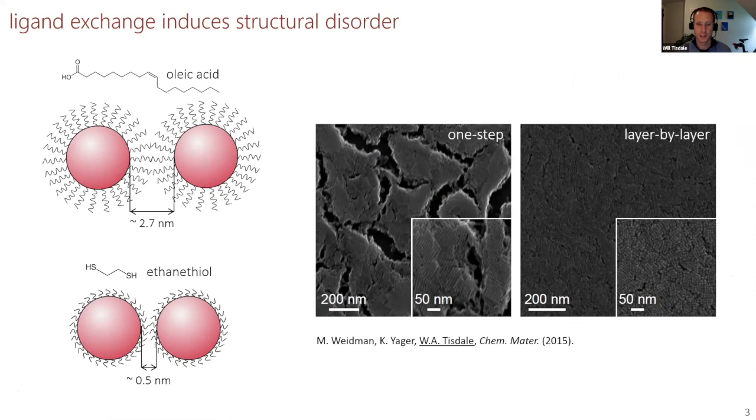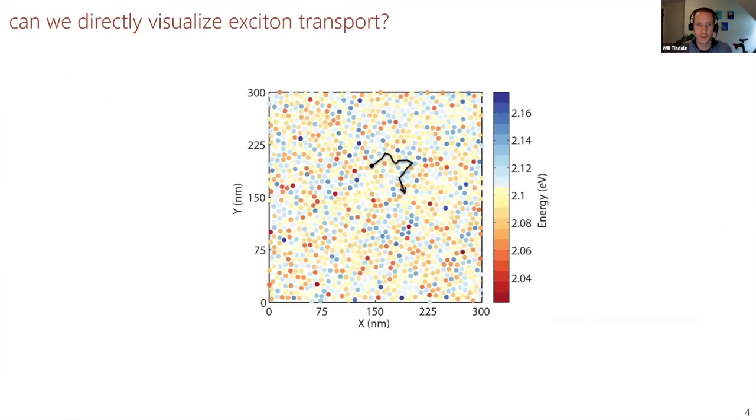As a result of that ligand exchange process, varying degrees of spatial and energetic disorder are introduced into the films depending on how you do the ligand exchange. You can maintain short range order but disrupt long range order or have a more continuous film but with a lot more local disorder. Very early on in my research career, I became really interested in the effect of disorder on transport and trying to nail down the microscopic dynamics of charges and excitons in these disordered arrays.